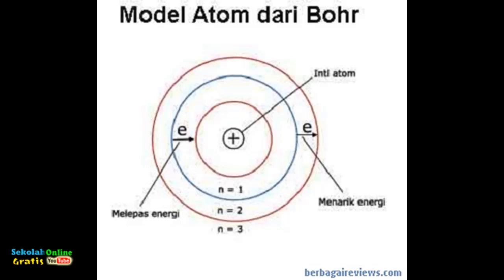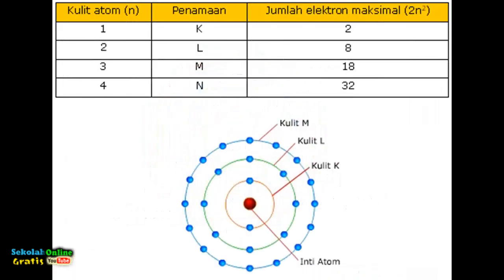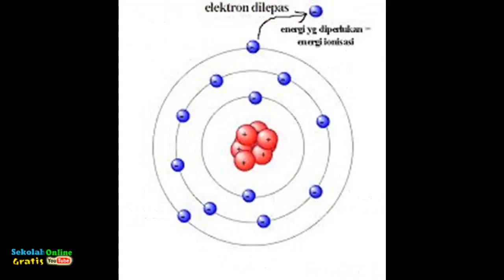Electrons located in the outermost shell will get a weak attraction from the nucleus. Thus electrons in the outermost shell easily escape from the atomic shell and atoms can lose electrons. If the number of electrons and protons in an atom is different the atom will be charged or form ions.